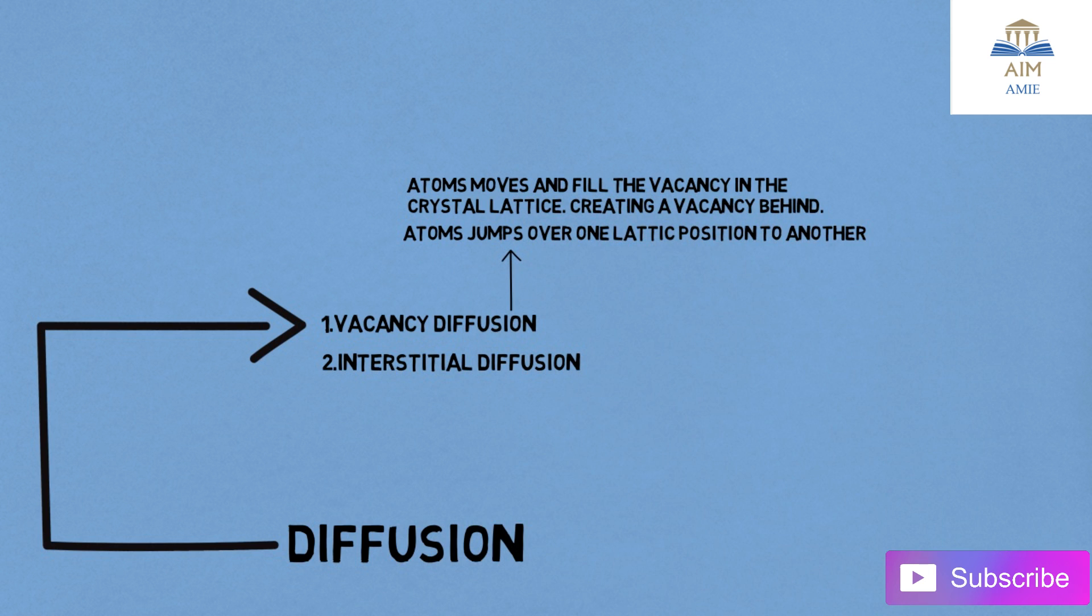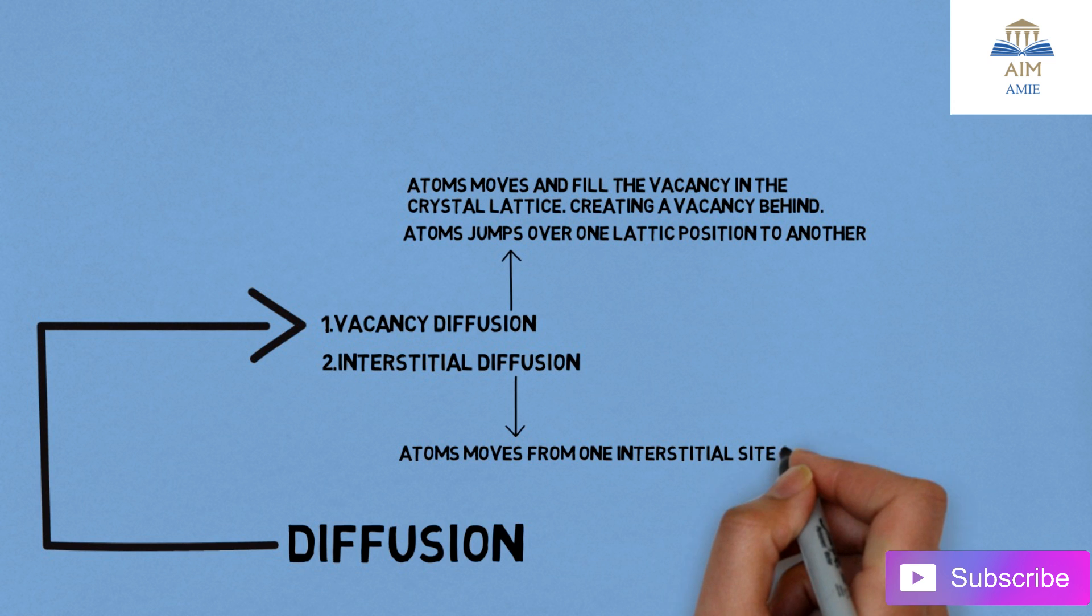Interstitial diffusion: the atoms move from one interstitial site to another site, creating an interstitial at that particular site.